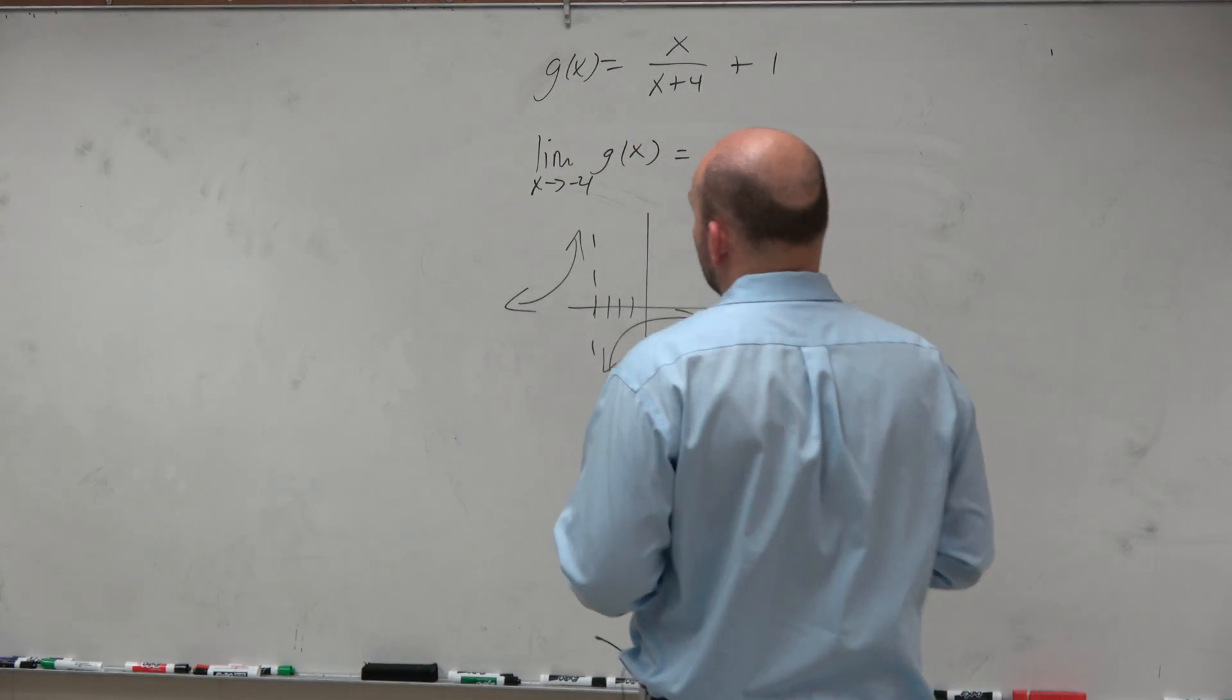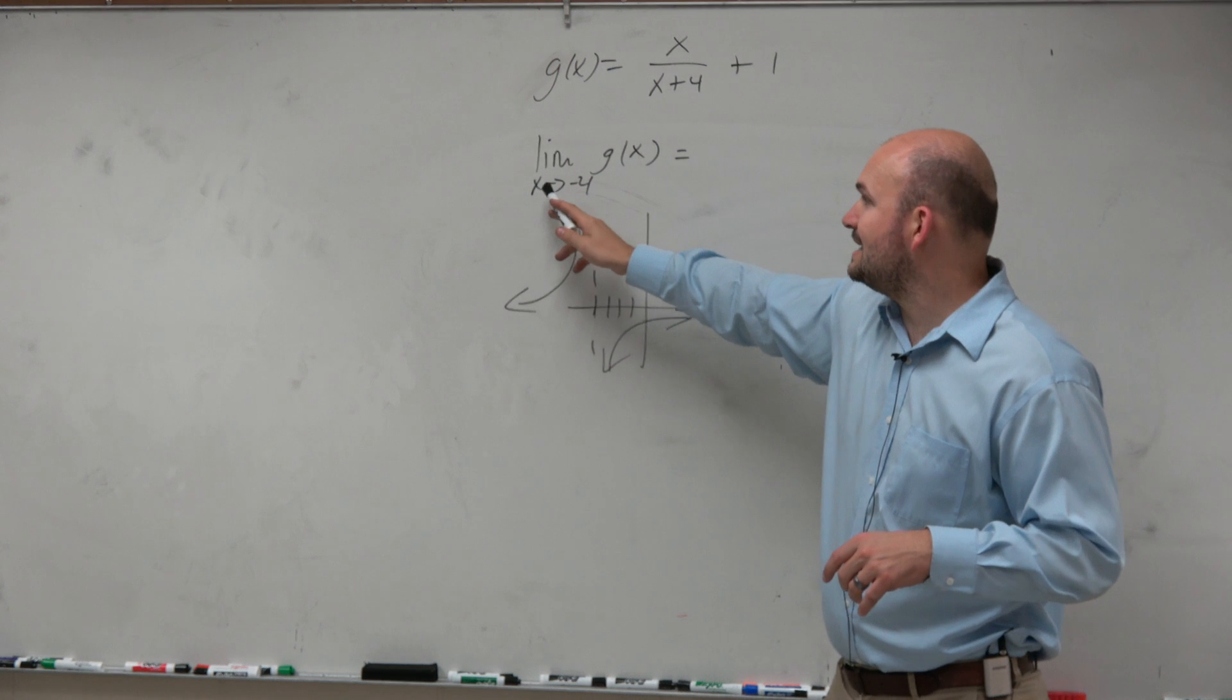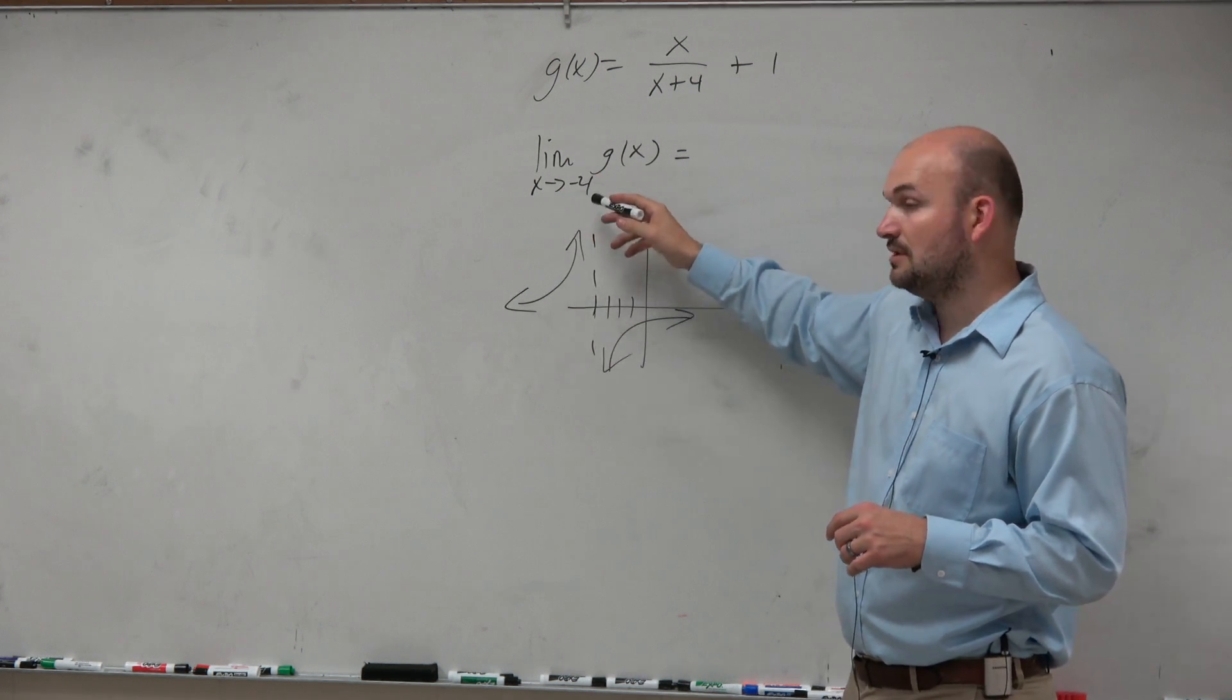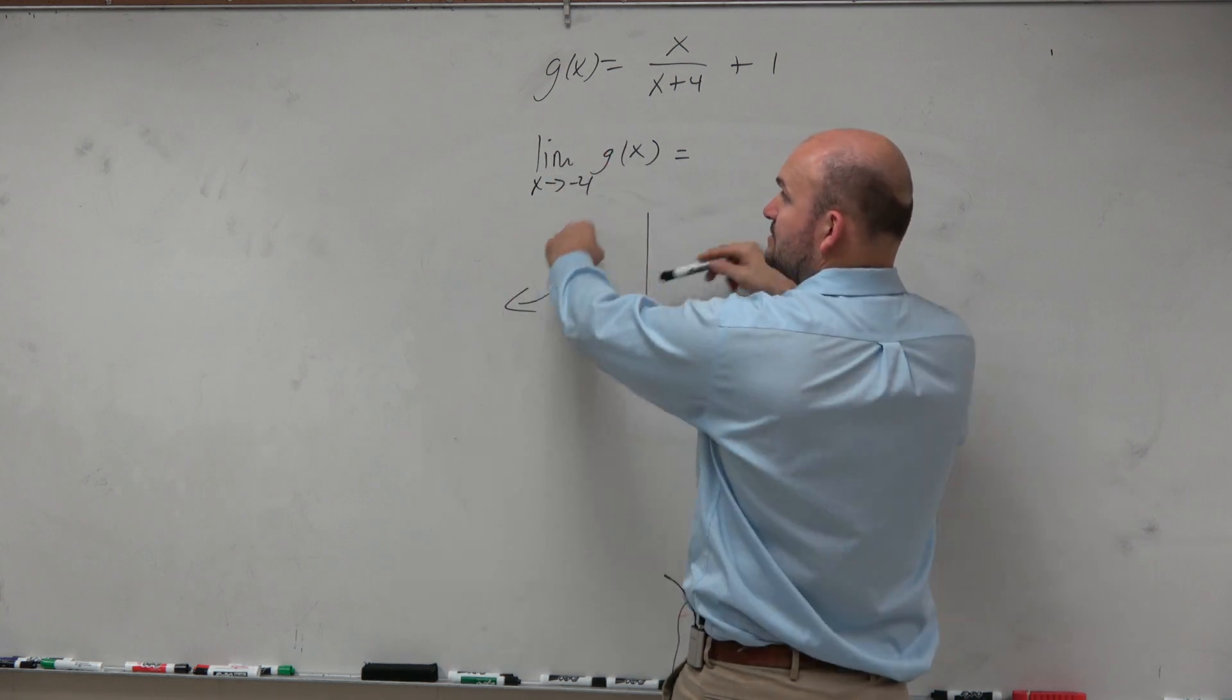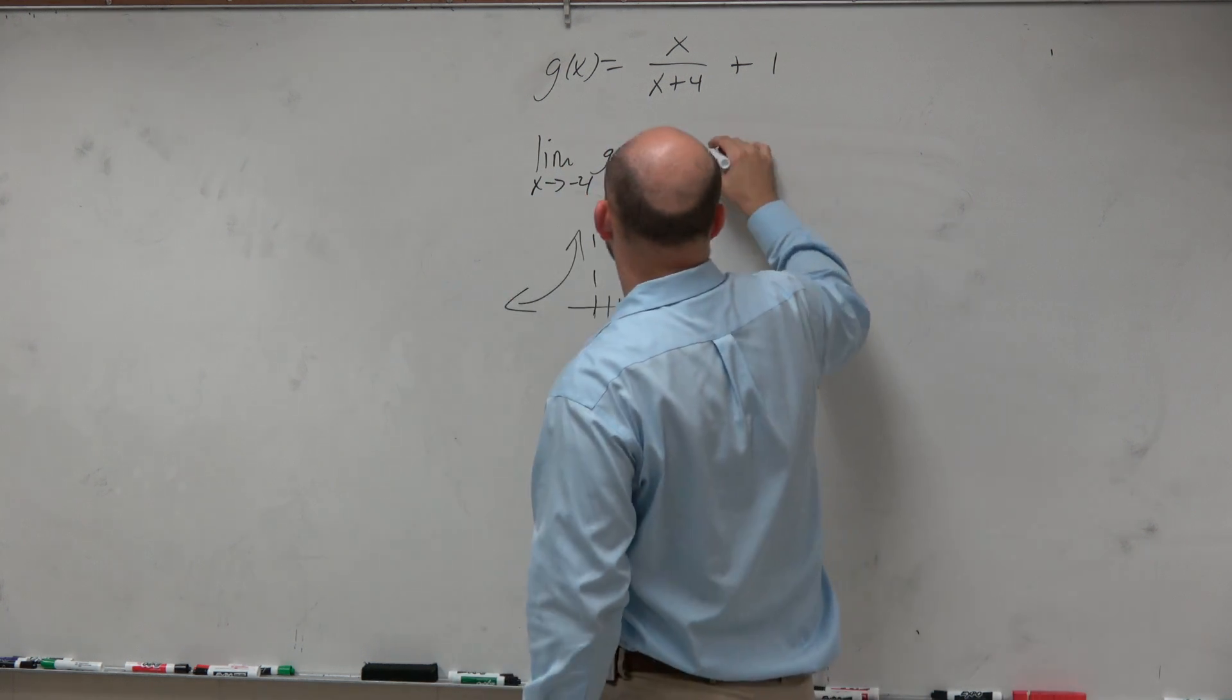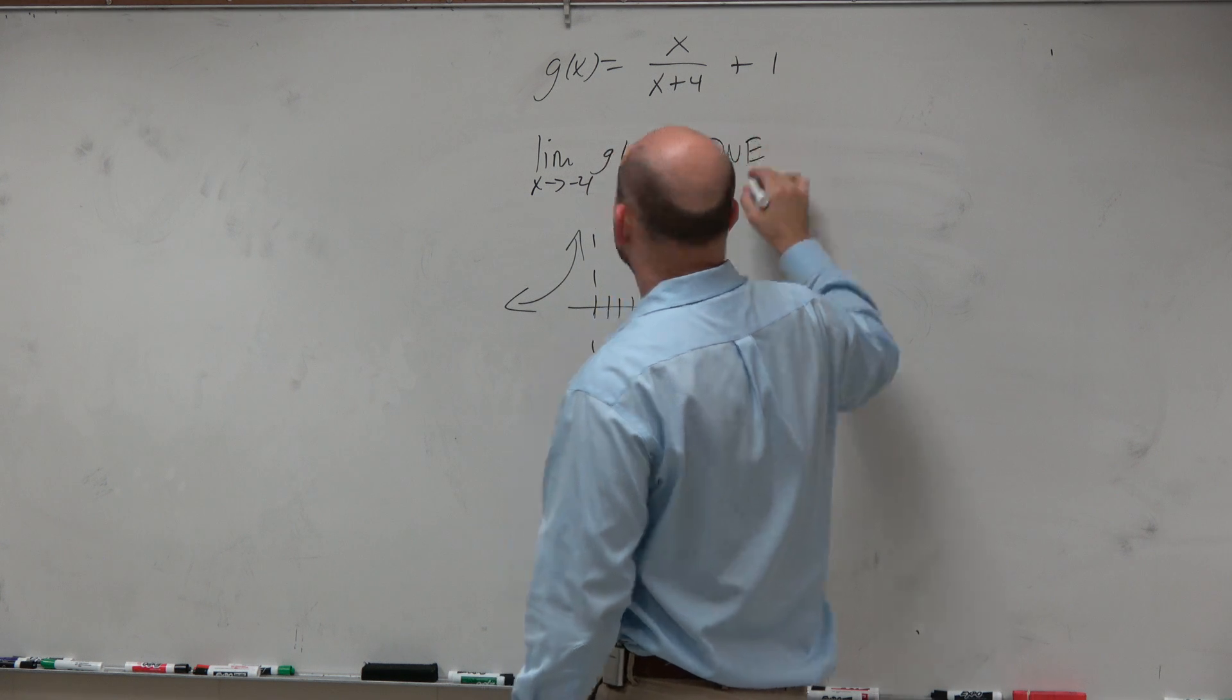So what we could do, though, is if we're looking to approach as x approaches negative 4, well, we know that the left and right hand limit have to be exactly the same. And are these going to be exactly the same values? No. So this is a does not exist.